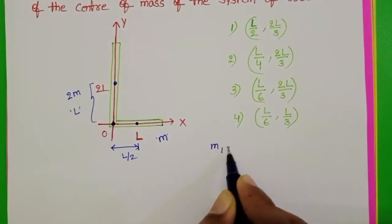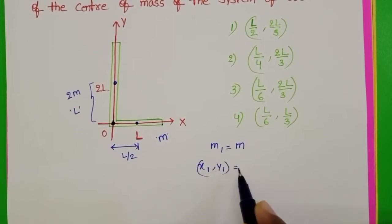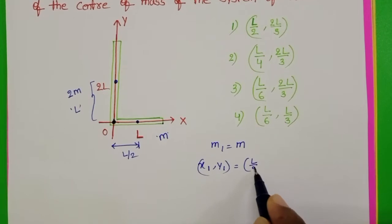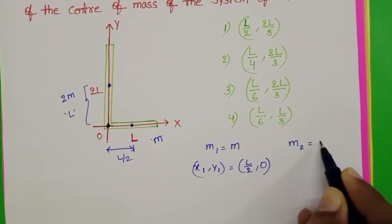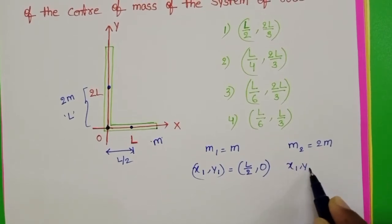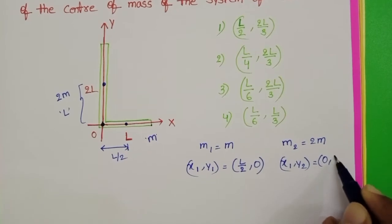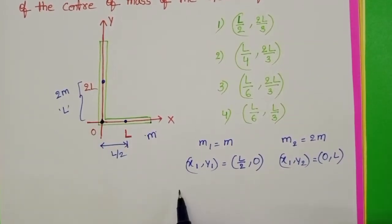M1 is equals to M. Center of mass of the first rod is located at L by 2 comma 0. Mass of the second rod is equals to 2M. And center of mass is located at 0 comma L.